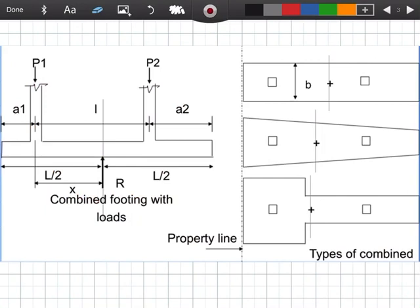Combined footings - we have three shapes here. We have rectangular, this one is the rectangular. Trapezoidal. And we have a T-shaped combined footing.